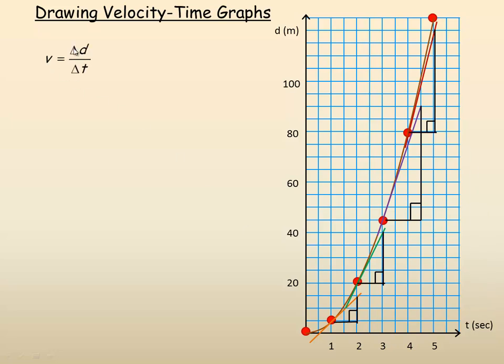Velocity is change in displacement over change in time. So for this very first one, at 1 second, the slope of that tangent line is 10 meters over a time of 1 second. So 10 divided by 1 is 10. The velocity right there is 10 meters per second, because that's the slope of the tangent line.